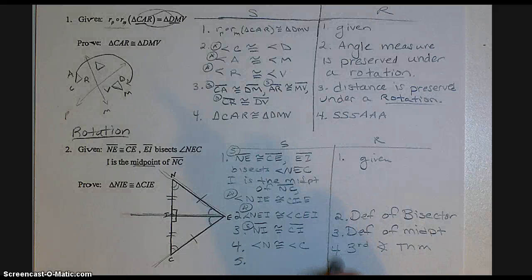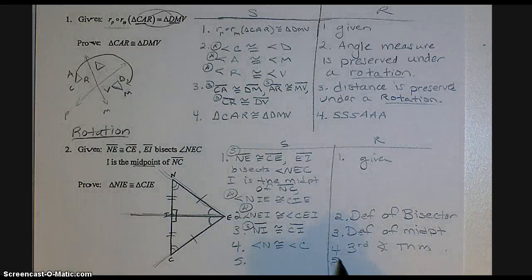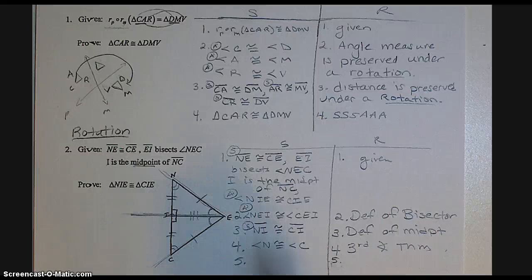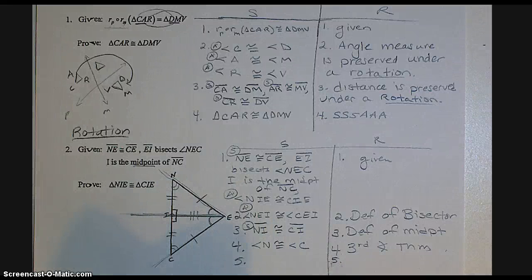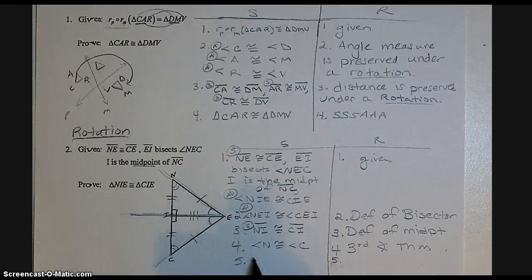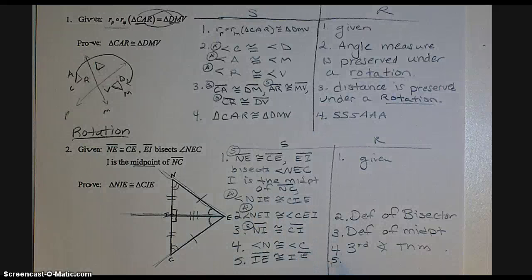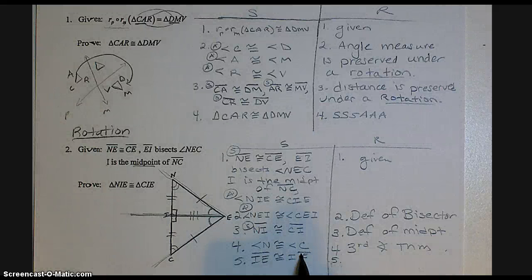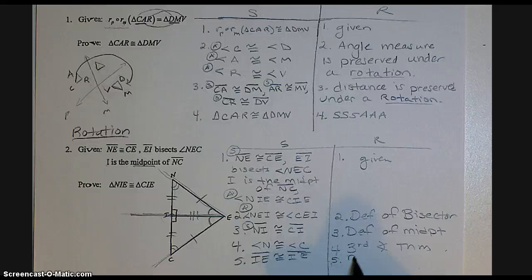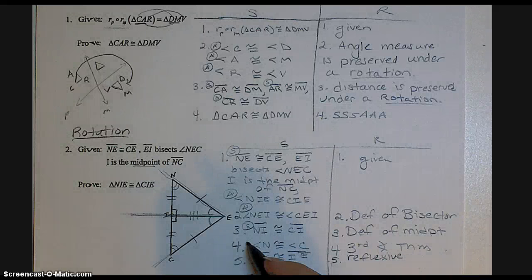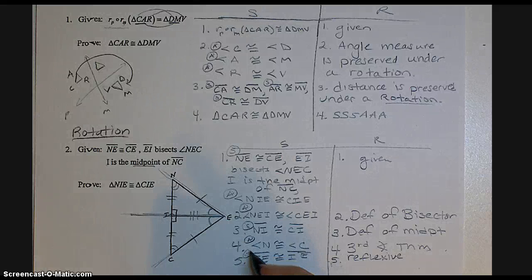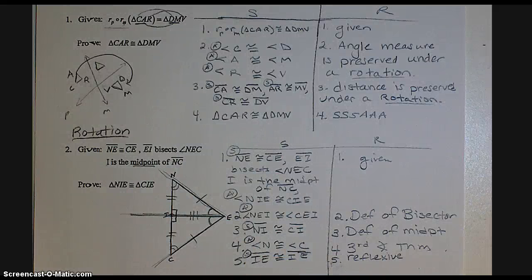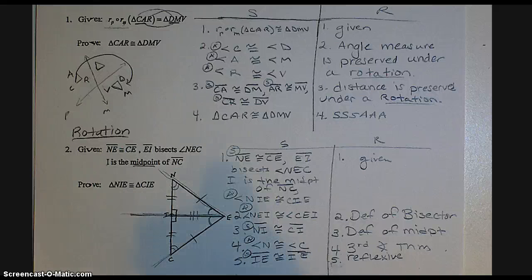And I'm missing one more side, which would be IE is the same in both triangles. I notice that they're kind of overlapping. So IE is congruent to IE. Well, that means it's congruent to itself, which would be reflexive. So now I've got my last missing angle and my last missing side. So now I have SSS AAA, so I'm done.